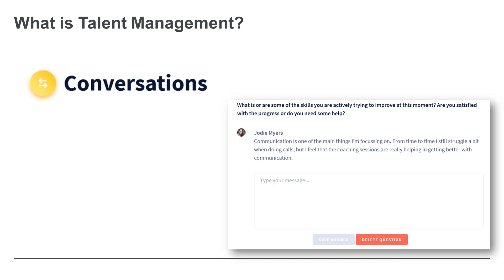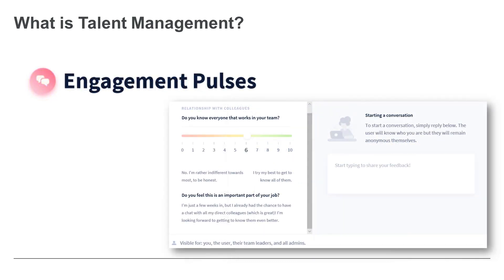Your HR team can also keep a level of governance. You can standardize different conversations using templates and make sure the right people have the right conversations at the right time. The Engage module is very simple but powerful — it holds a finger at the pulse of your organization.